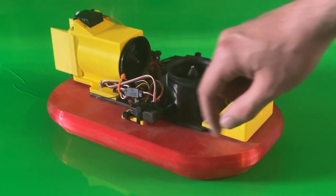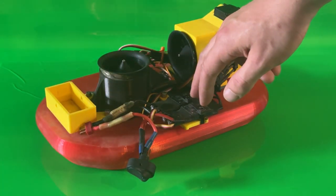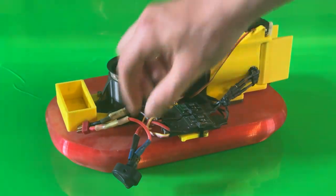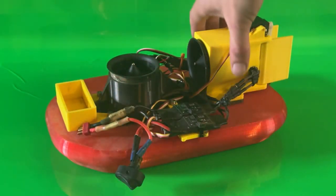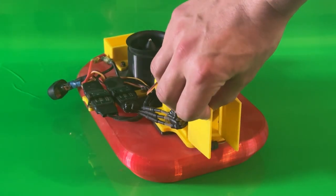It's controlled with a Dumbo RC receiver and we have two brushless motor controllers for the EDFs. We've just got a switch here to disconnect the battery. The steering is just a servo connected to a couple of little flaps and that just directs the air.